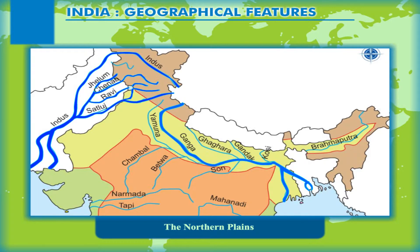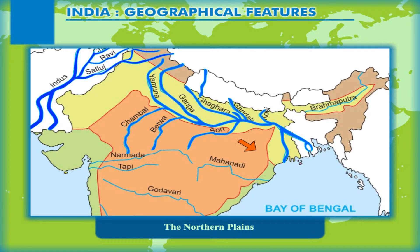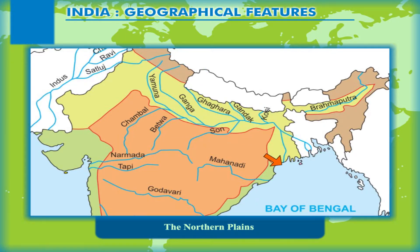River Ganga and its tributaries — Yamuna, Gomti, Ghagra, Gandak, Kosi, Son, Betwa, Chambal and Ken — flow south-eastward and eastward and join the Bay of Bengal. The Brahmaputra, which originates in the Himalayas, flows eastwards and then turns westwards and southwards to join the Bay of Bengal.